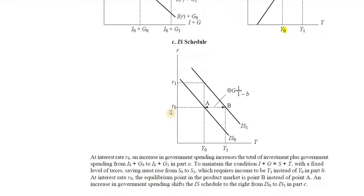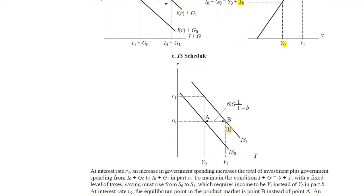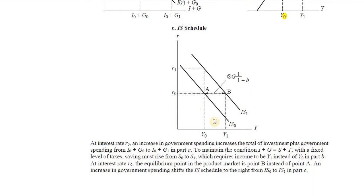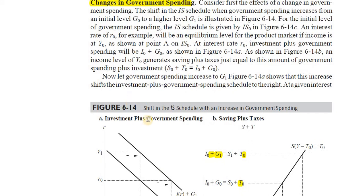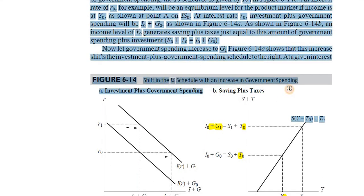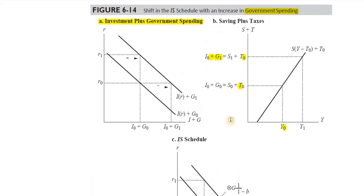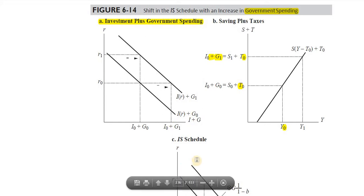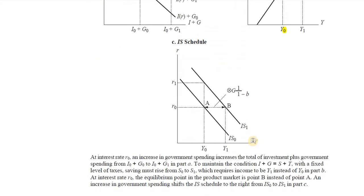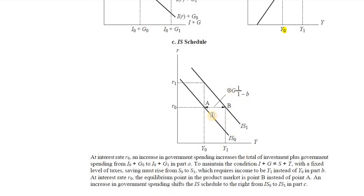At rate of interest R0, income was Y0 — we were at point A. Now at R0, income has gone up to Y1, giving us point B. This is a rightward shift in the IS curve. A fall in government spending would produce the reverse — income falls from Y1 back to Y0, causing a leftward shift in the IS curve.